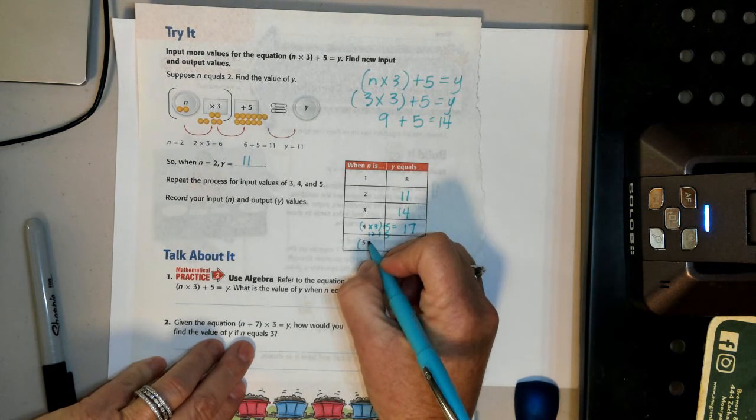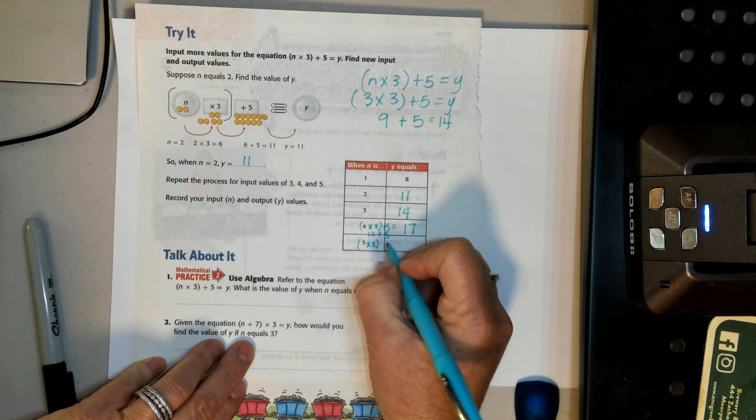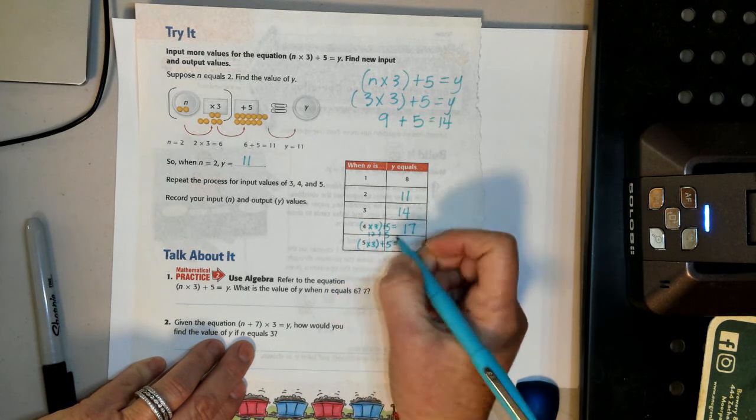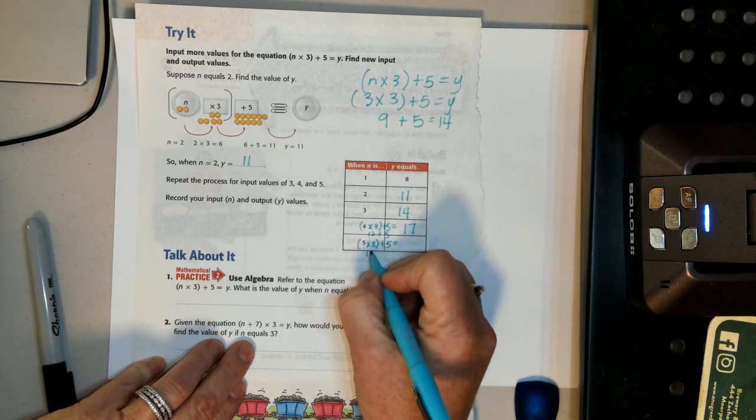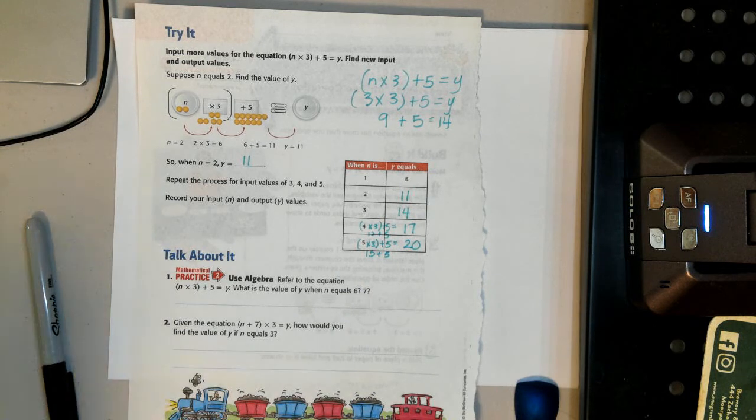Same thing here. 5 times 3, because we're still doing the same equation, plus 5 equals what? Well, 5 times 3 is 15 plus 5 equals 20. And we recorded all of them right there.